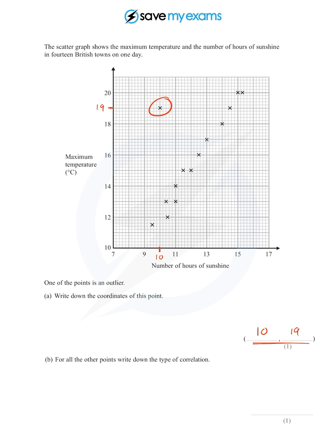For all the other points, write down the type of correlation. Well, as we've already said, as one goes up, the other goes up. And so we've used this word already. It's positive correlation.